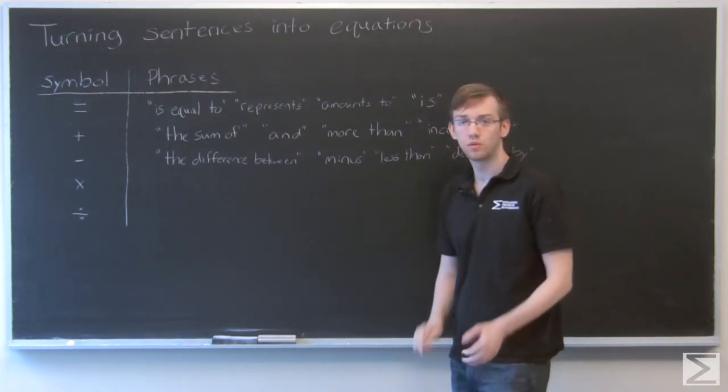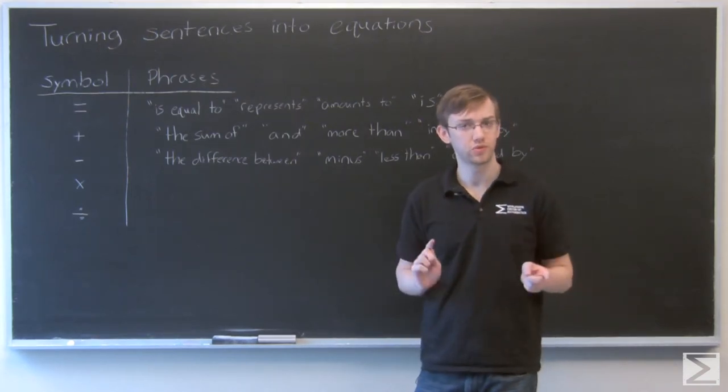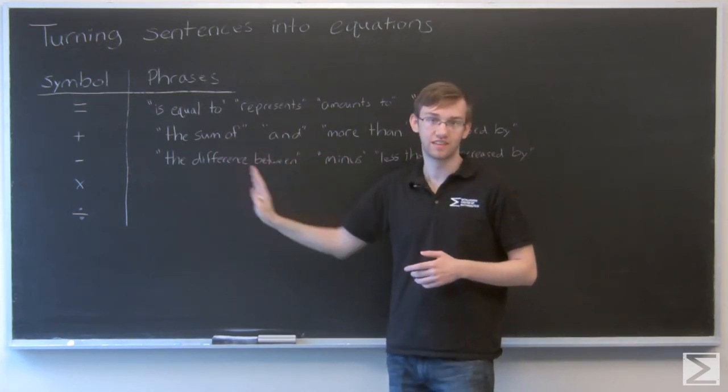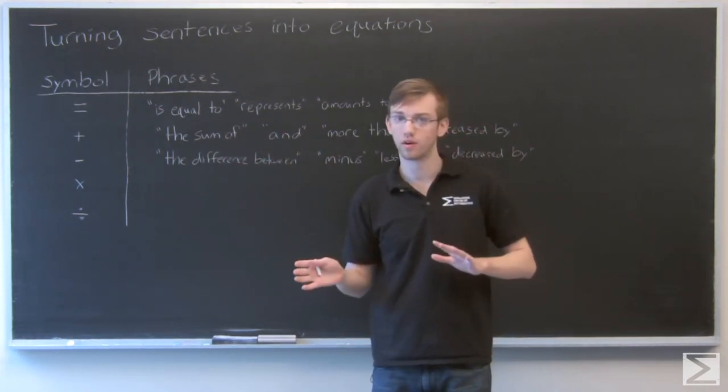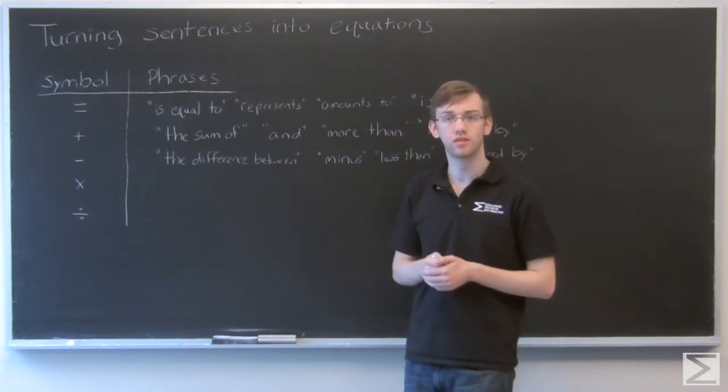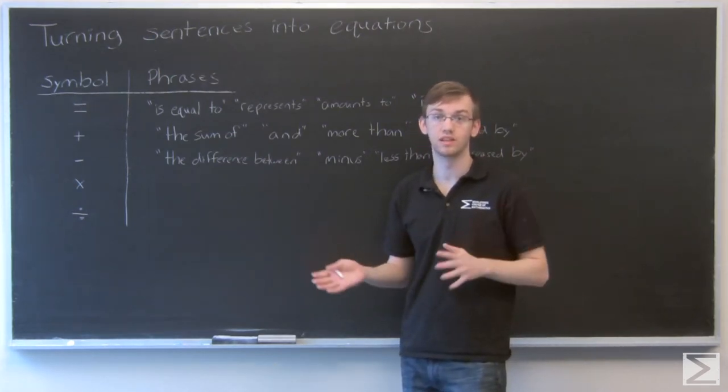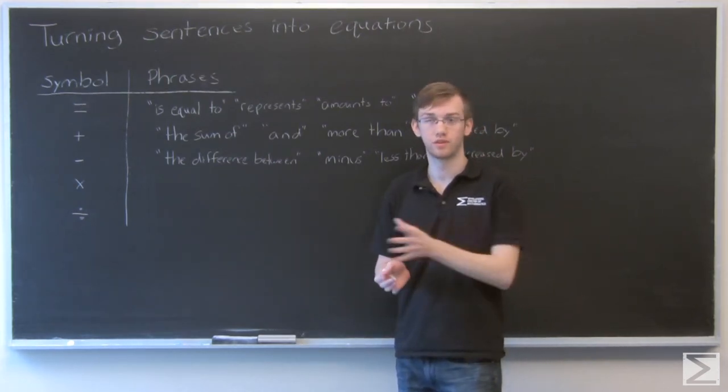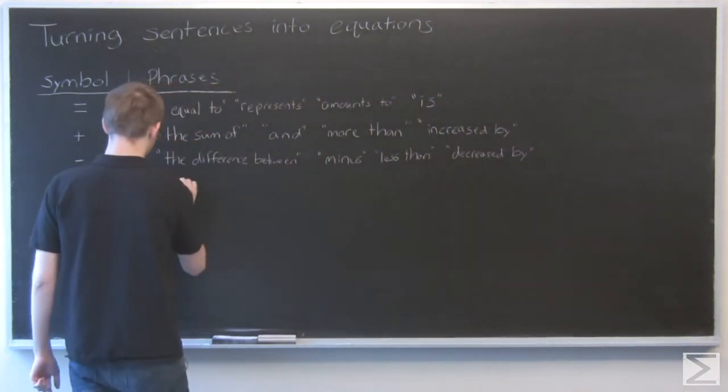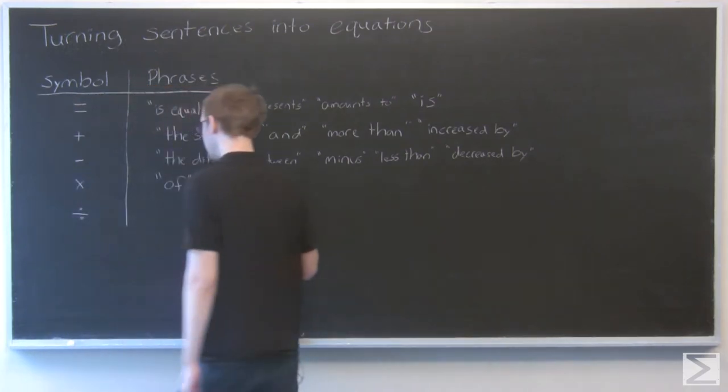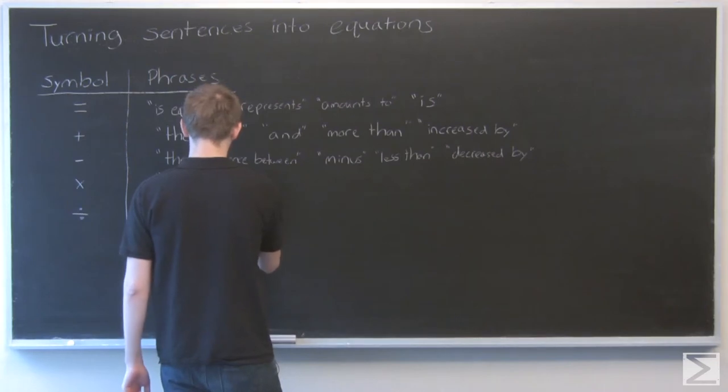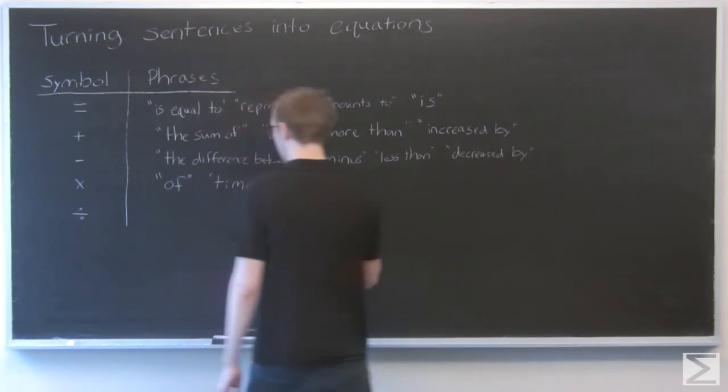For multiplication, probably the most important word that you often don't think of as multiplication is the word 'of.' This isn't like 'the sum of,' not that kind of 'of,' but when you see half of a number, or in terms of percents, 40% of $50, the word 'of' is actually meaning times. So half of a number means one half times that number. Other words you would see are 'times,' obviously, or 'the product of.'